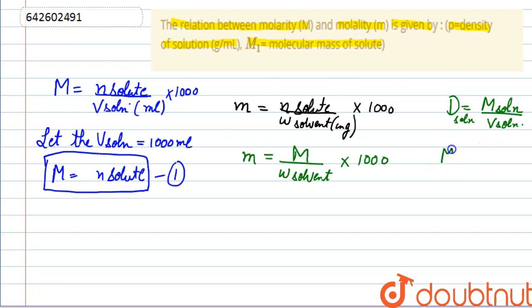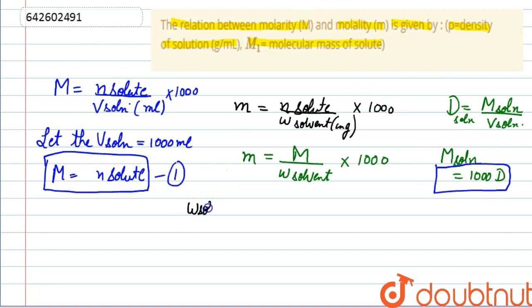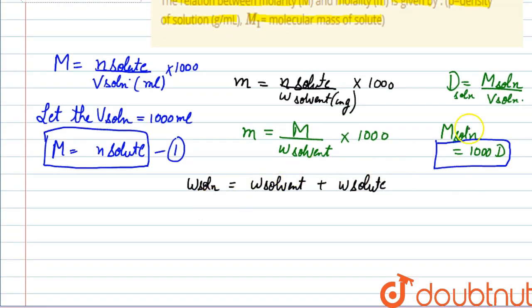Since we assumed volume = 1000 mL and density = d, the mass of solution equals 1000d. We also know that the weight of solution equals weight of solvent plus weight of solute, according to the law of conservation of mass. So: 1000d equals weight of solvent plus weight of solute.